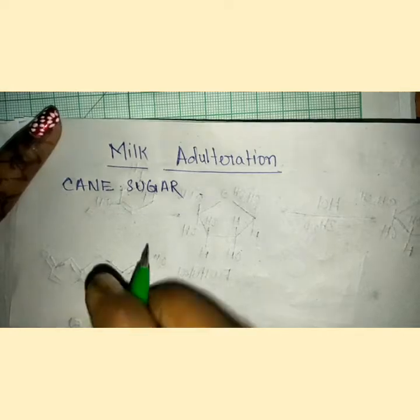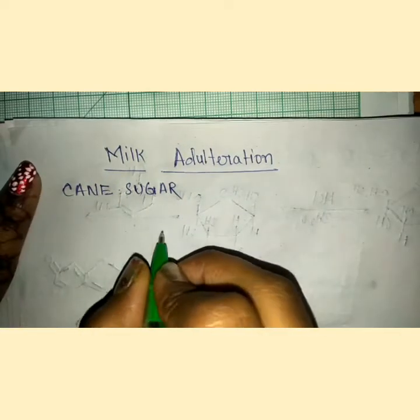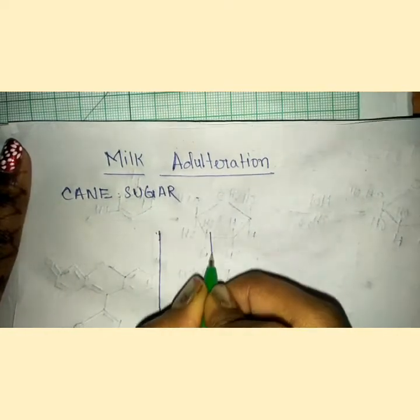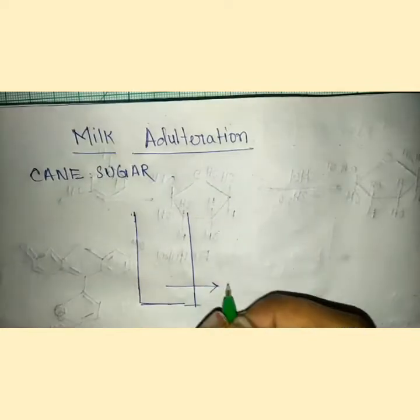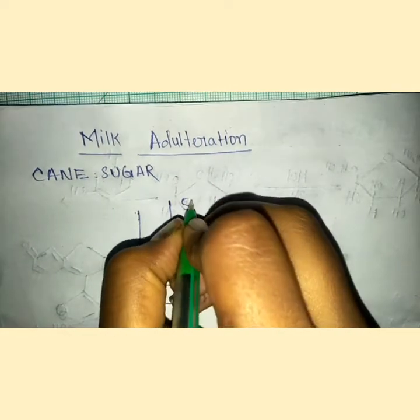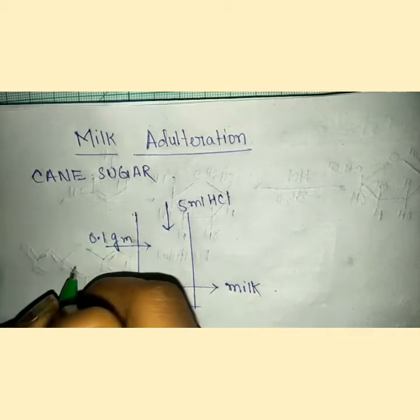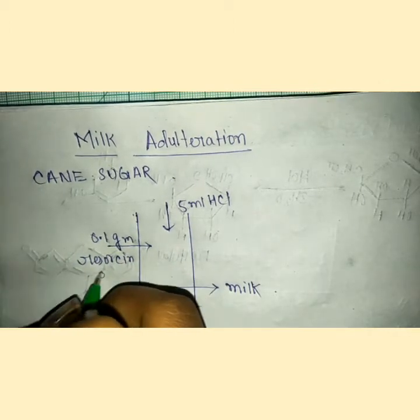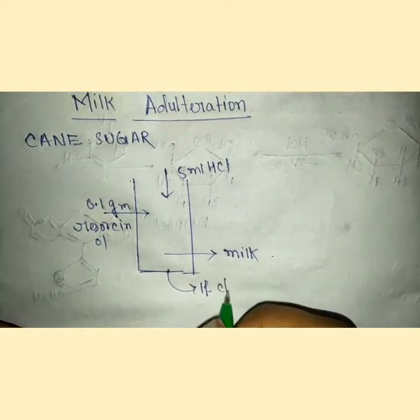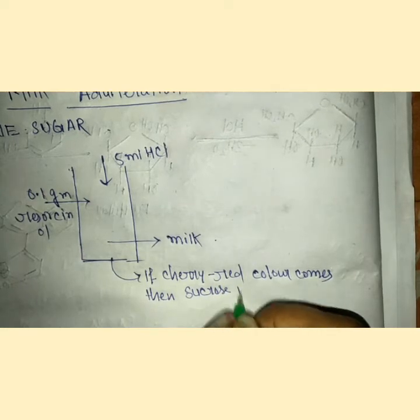How is this reducing sugar present in milk or not? This is a qualitative test. For this test, we take a test tube containing milk. We take 5 ml HCl, then 0.1 gram resorcinol. If cherry red color comes, then sucrose is present. This is a simple qualitative method.